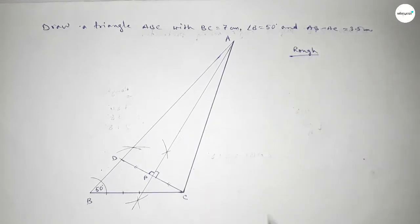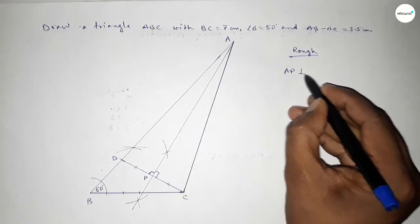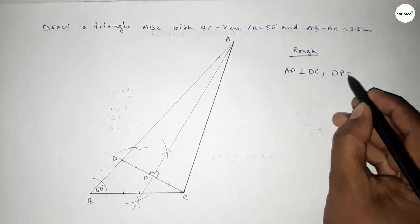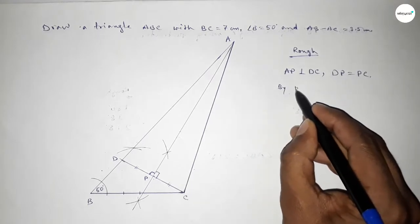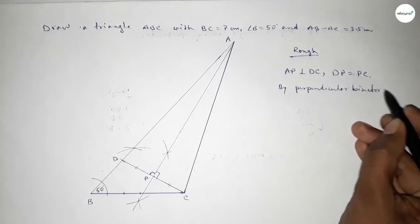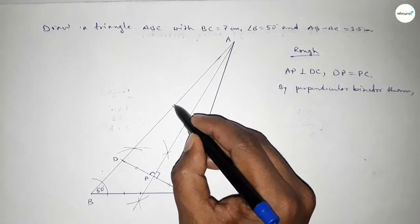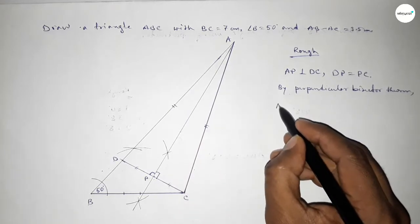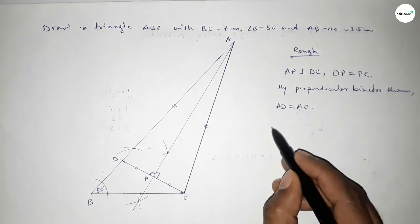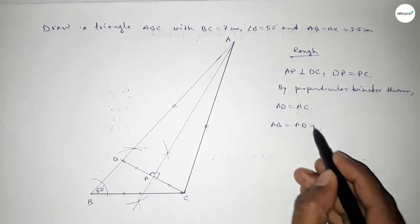To discuss the proof: AP is perpendicular to DC and bisects it equally, so DP equals PC. By the perpendicular bisector theorem, AD equals AC. Therefore we can write AB equals AD plus BD.